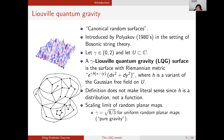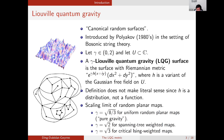It is known that the uniform planar maps converge to the real quantum gravity for gamma equals square root of eight over three, which is known as pure gravity in physics terminology. Of course, we can choose a planar map in a non-uniform way, and a natural choice is to sample a planar map with probability proportional to the partition function of a certain statistical physics model. This corresponds to LQG for gamma not equal to square root of eight over three, known as gravity coupled with matter. For instance, we could reweight by the number of spanning trees, corresponding to gamma equal to square root two, or reweight by the partition function for the critical Ising model, corresponding to gamma equal to square root three.